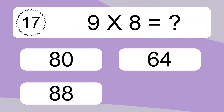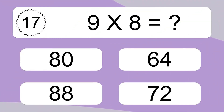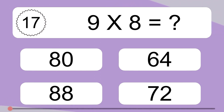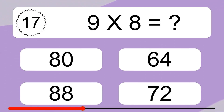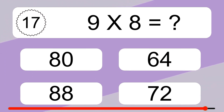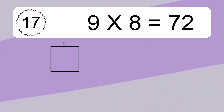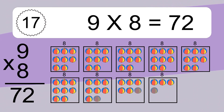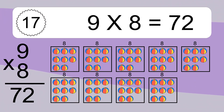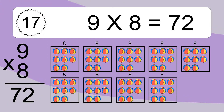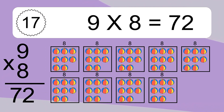9 times 8 equals what? 9 times 8 equals 72. We have 9 boxes, and each box has 8 colorful balls inside. If you count all the balls in all the boxes together, you will have 9 times 8 balls. This equals 72 balls.